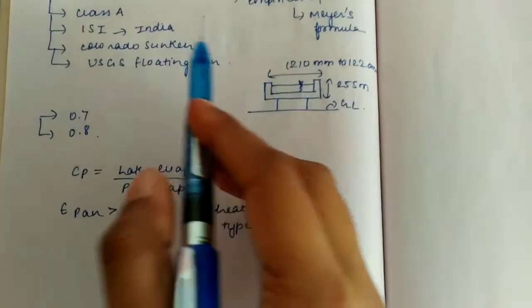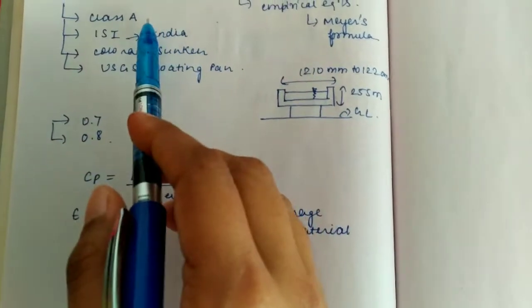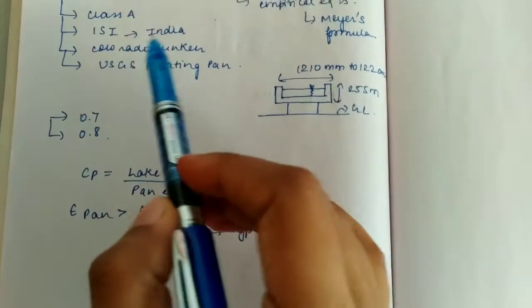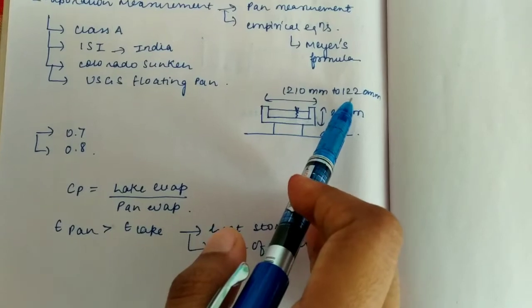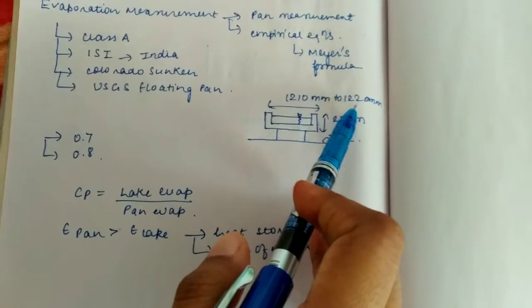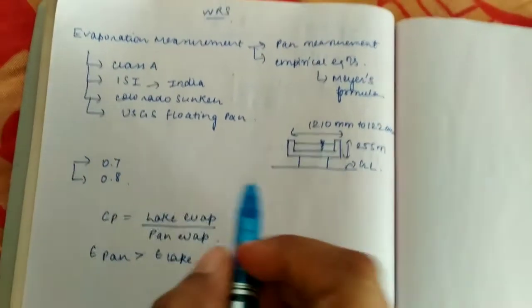So diameter is 1210 mm for Class A pan. For ISI pan, it is 1220 mm.